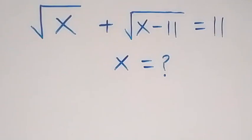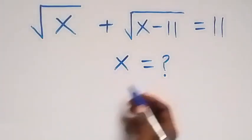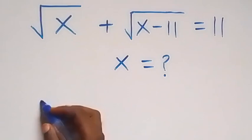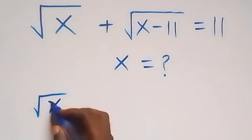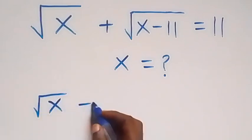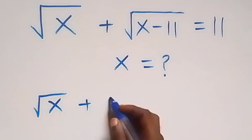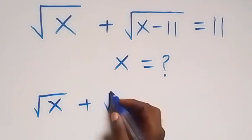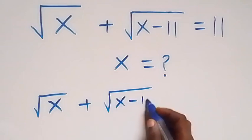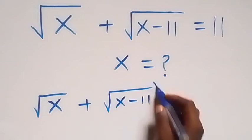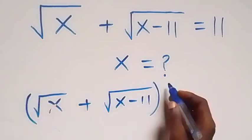Hello, you are welcome. How to solve this nice square root problem? From what we have here, we can square root this side. We have root x plus root x minus 11, with 4 squared on this side.